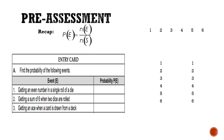Before moving forward to our lesson on constructing probability distributions, let's do this pre-assessment activity, recalling the definition of your probability. We define probability as the study of randomness, or by simply using a formula: probability is equal to your desired outcomes over your total possible outcomes. Now let's try to apply this concept. In your entry card, we are asked to find the value of the probability of the following events.